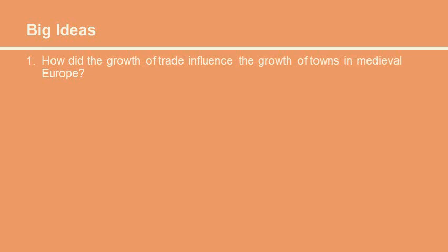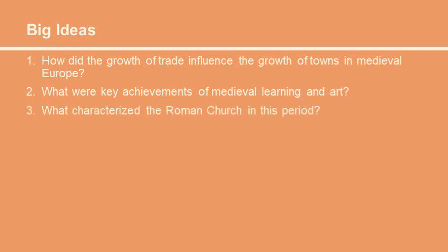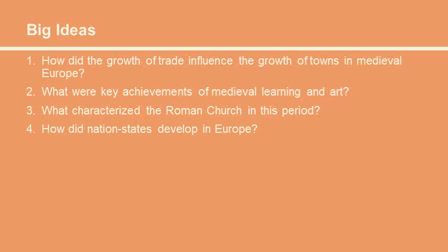So what are the big ideas for Chapter 10? The growth of trade and the growth of towns; the key achievements of medieval learning and art in Section 2; the Roman Church and both its greatest power but also its beginning decline as we come to the Reformation and the modern era. Also the rise of nation states — moving from decentralized feudalism where kings don't have much power to a time where they acquire a lot more power, and people start to think of themselves more in terms of being French, not just belonging to a local baron, but being part of a country.